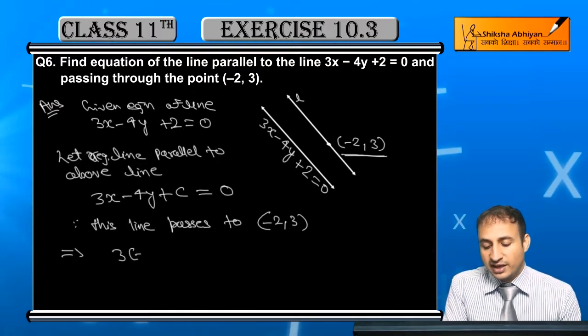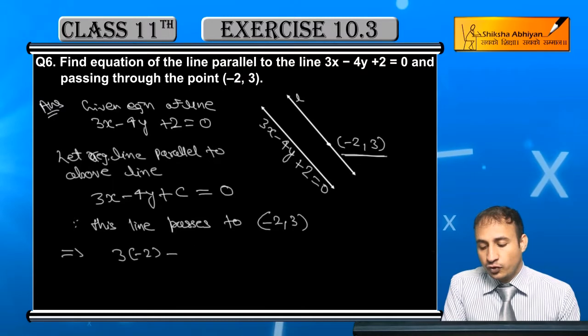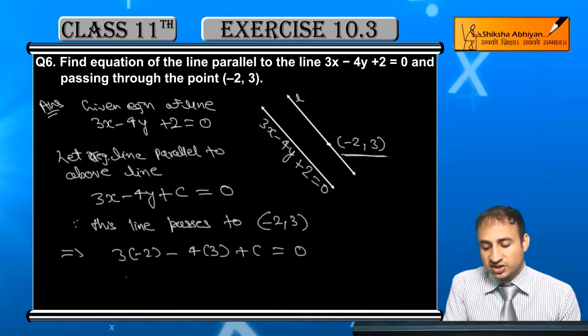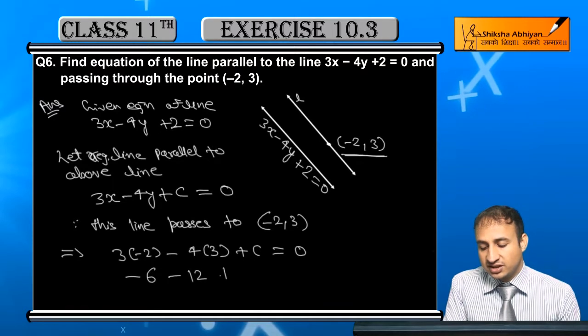So 3 into -2 minus 4 into 3 plus c equals 0. This is -6, this is -12 plus c equals 0.